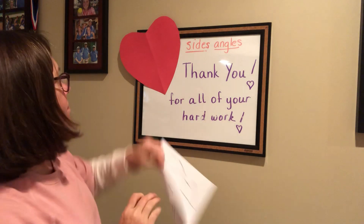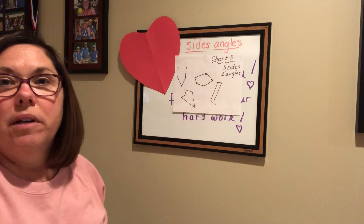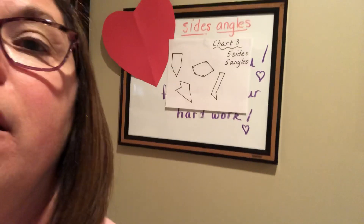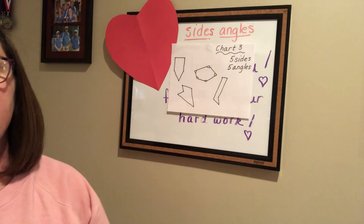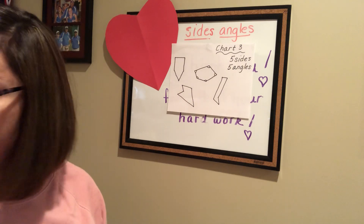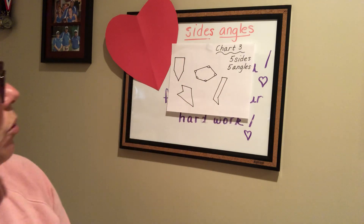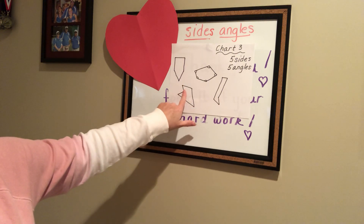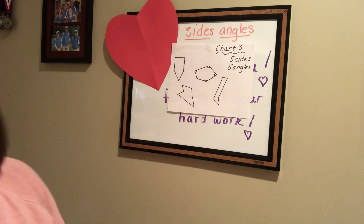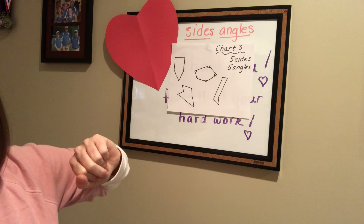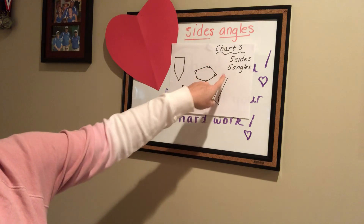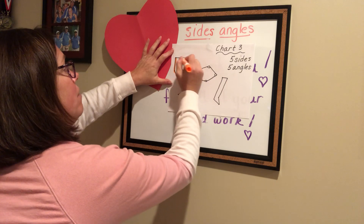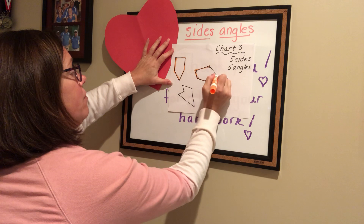I bet you can — you guys are so smart. Okay, here's our next one. Same thing — we're counting and we're looking at the shapes. What are you noticing? Well, I'm noticing this one is really long and it has a different shape at the bottom. And I'm noticing this one kind of caves in a little bit. And these seem to be a little larger. Well, if you're looking at Chart 3, it's saying that it is five sides and five angles. Let's start our counting. So we have one, two, three, four, five.